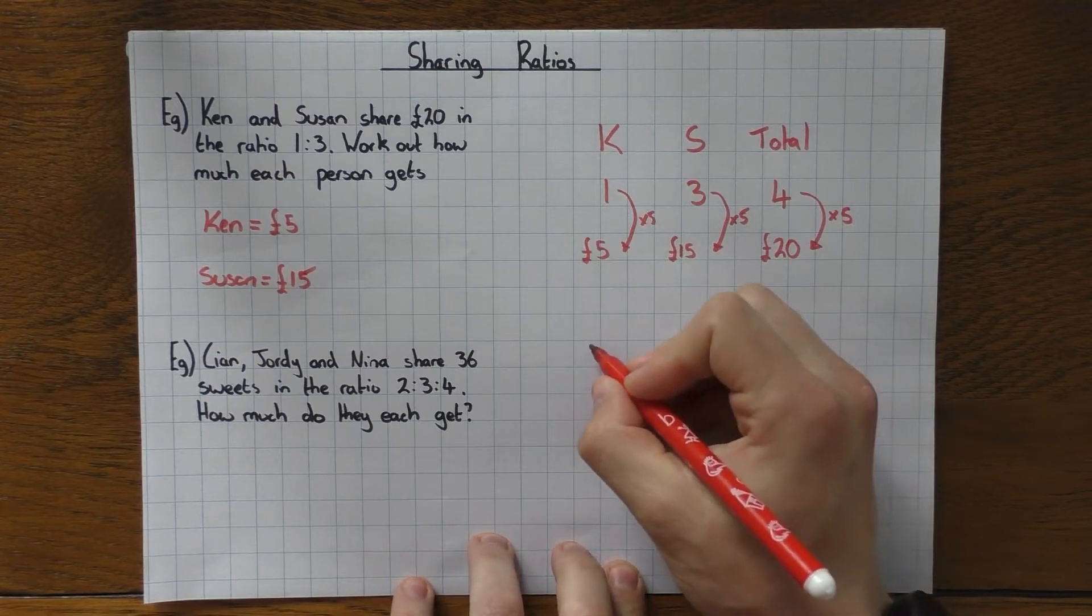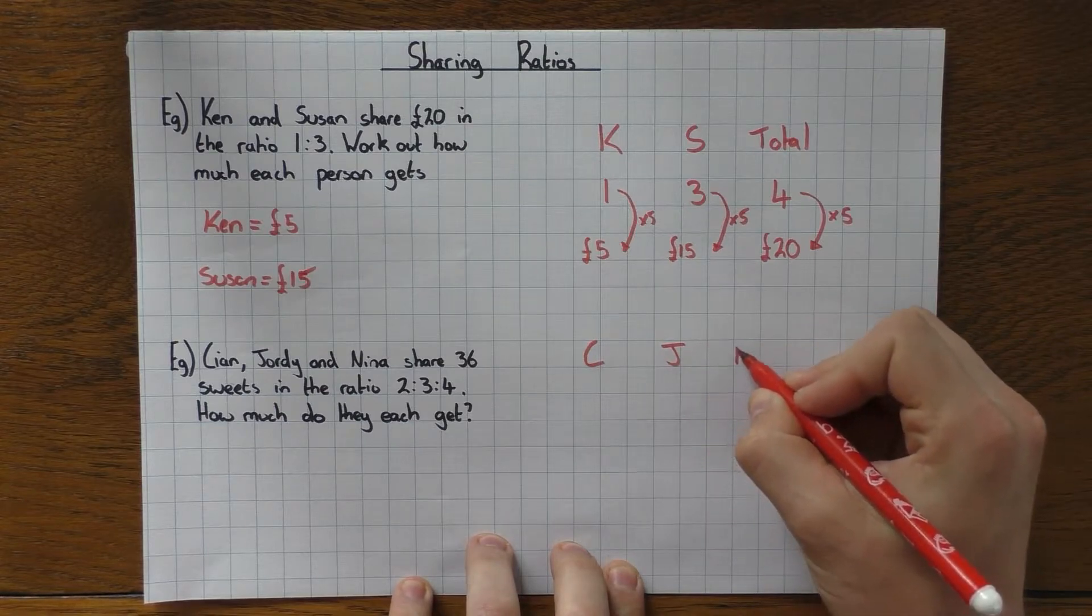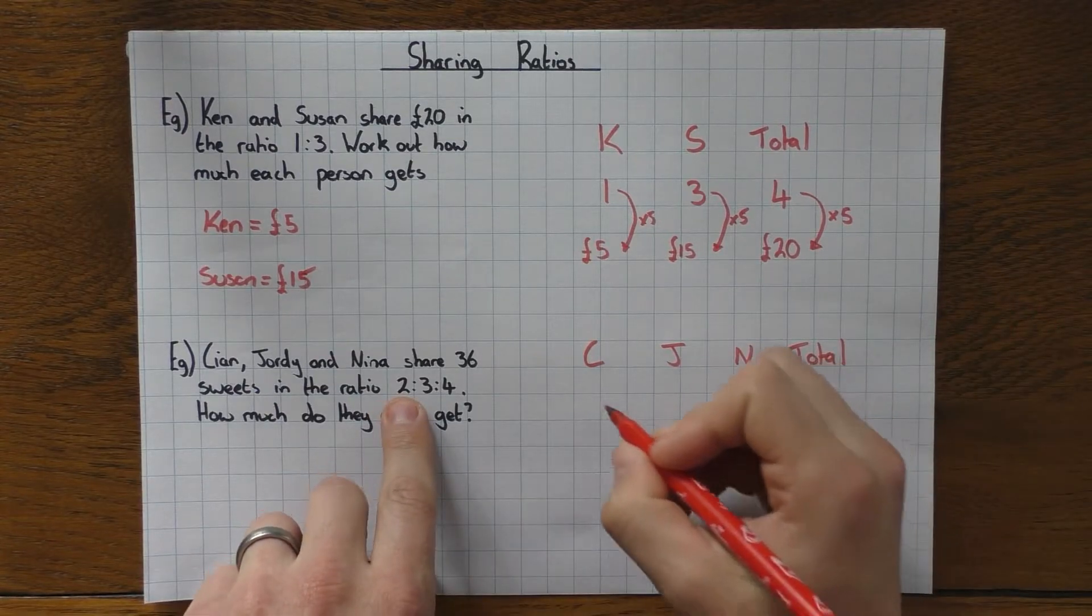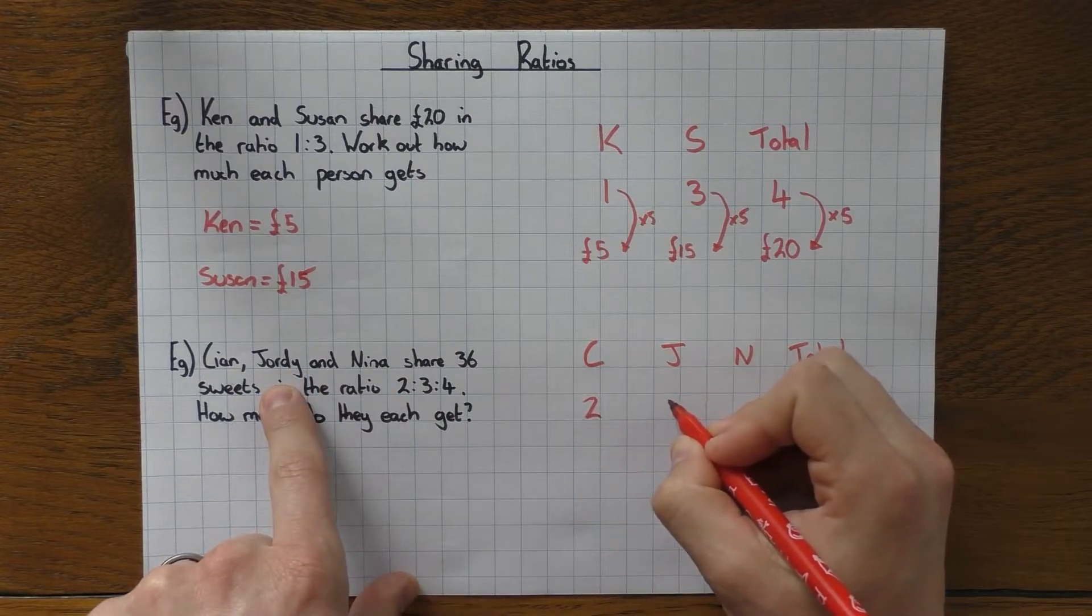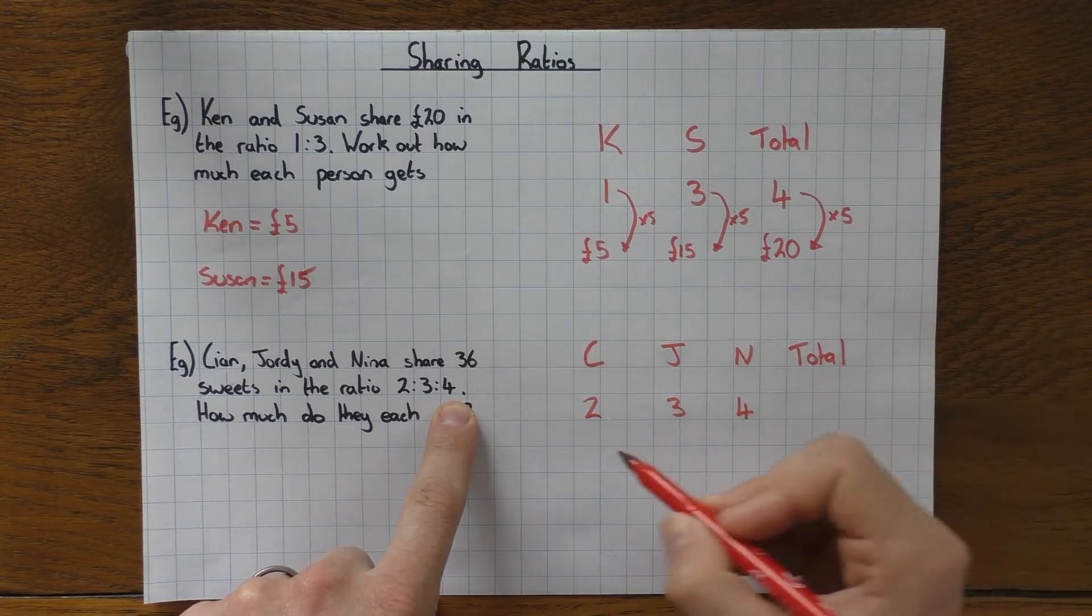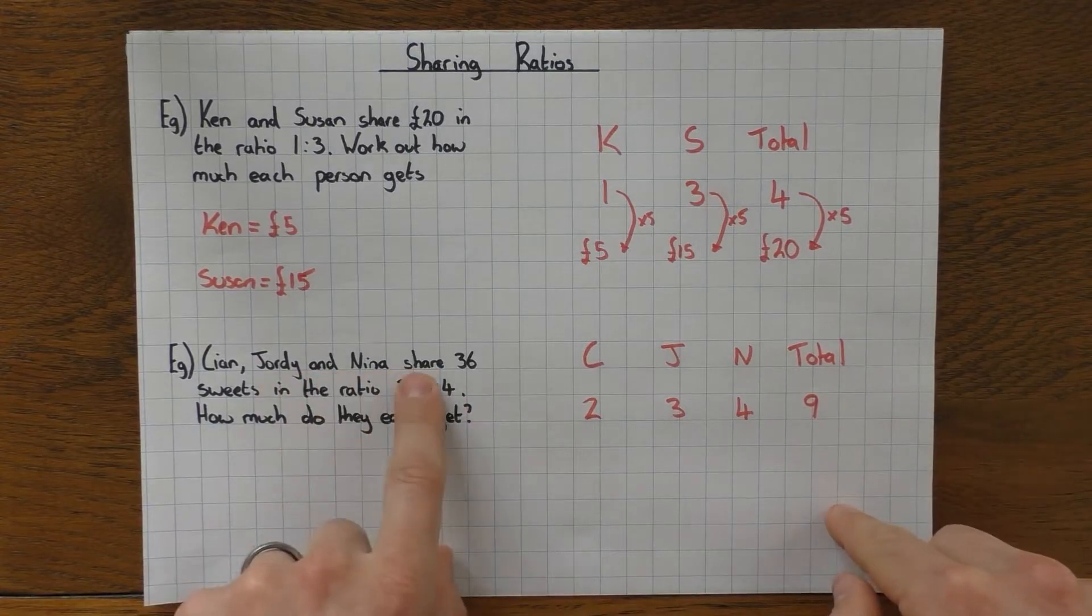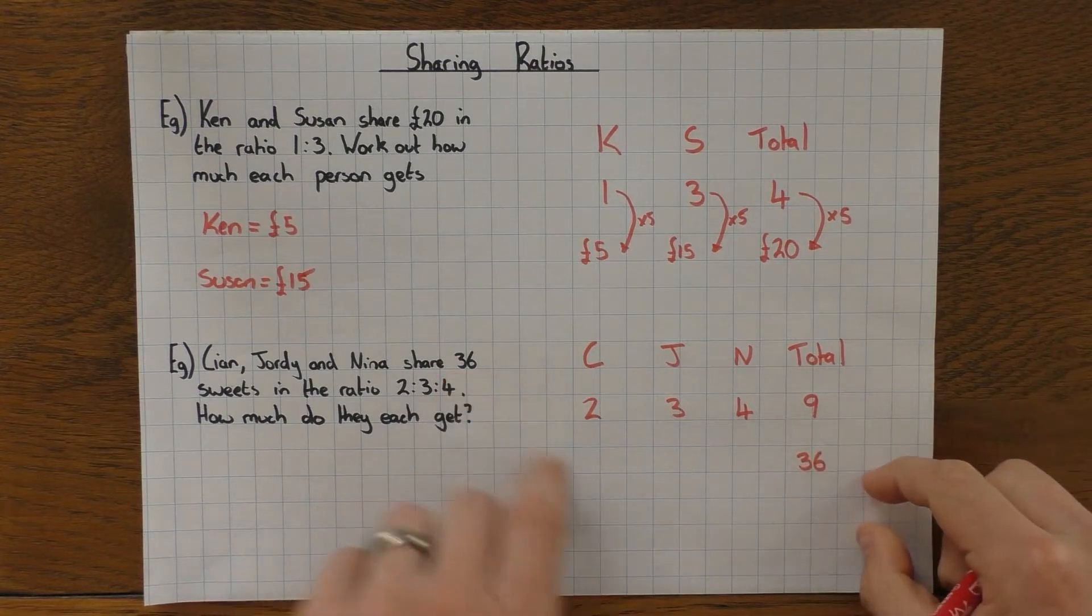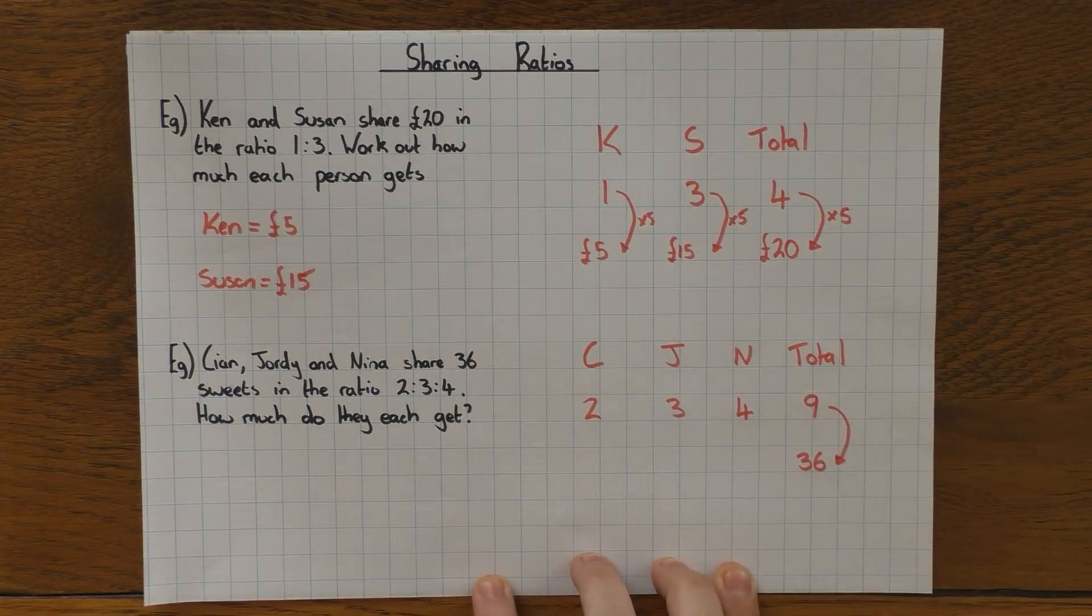Same thing for this one. Even if you've got three, don't have to put you off—just draw a table. So I'm going to use C for Kian, J for Geordie, N for Nina. Don't forget to write the total. So Kian's first, first number is 2, so Kian gets 2. Geordie's next, he then gets 3. And Nina is the last one there, so she gets 4. So the total: 2 add 3 is 5, add 4 is 9. And they are sharing, so again in total they are sharing 36 sweets.